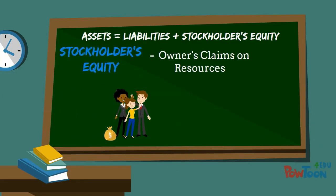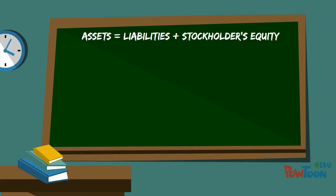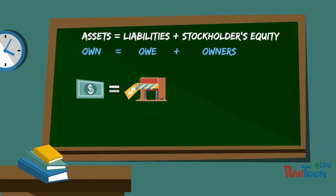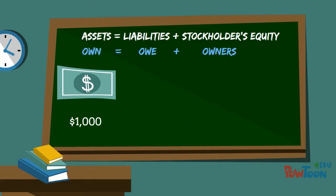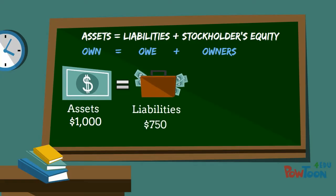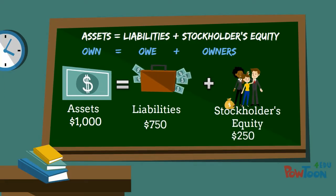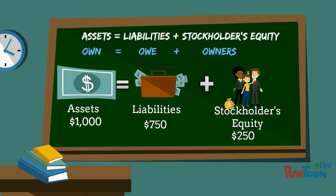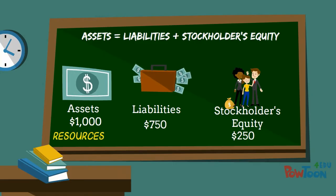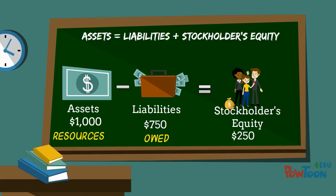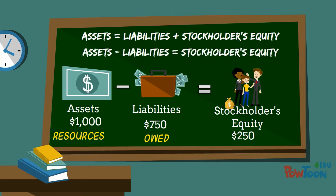Stockholders' equity is the owner's claims on the resources of the company. Another way to look at the equation is the amounts we own are balanced against what we owe and what is owned by the investors. If we had $1,000 cash and $750 in liabilities, then our stockholders' equity must be $250 to balance the equation. Another way to look at it is assets or resources minus liabilities or amounts owed equals the residual amount available to the owners of the company.